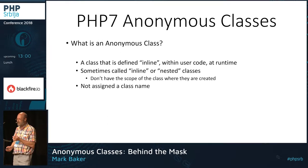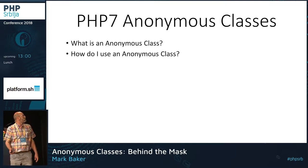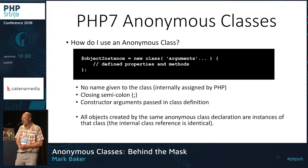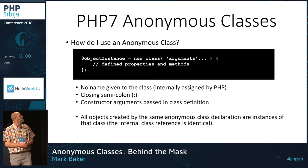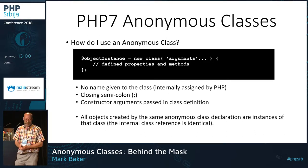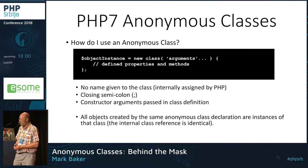We can't do 'new XYZ' because we don't know what XYZ is in this case. That's how we define it — very simple, very straightforward. The oddity you might notice is I'm assigning it to a variable called 'object instance'.